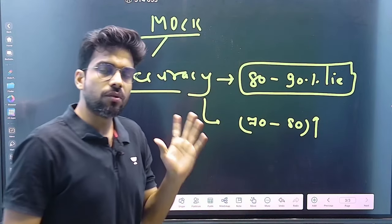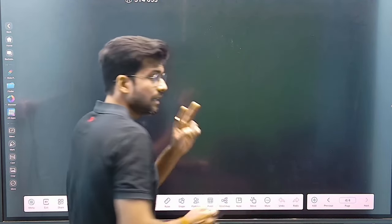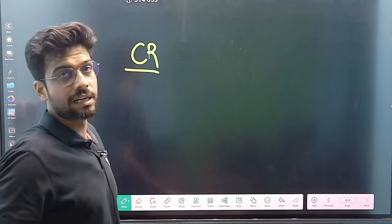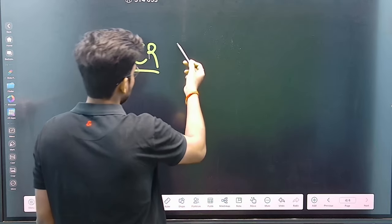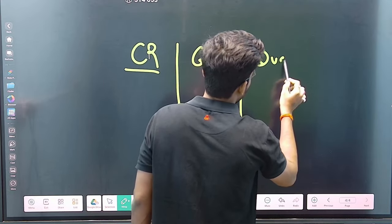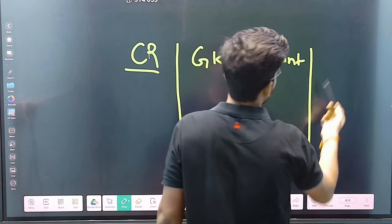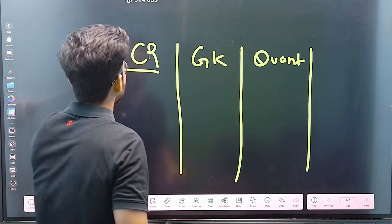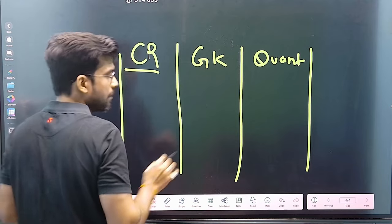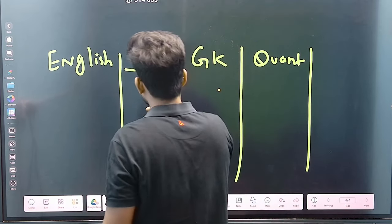Try to avoid negatives in at least three subjects: CR (Critical Reasoning) — many students lose marks here, so avoid negatives in CR. Also try never to have negatives in GK, and never in Quant. Since you are studying Legal, you won't go negative there. And if you avoid negatives in CR, I can guarantee you will also not go negative in English — that's my guarantee.